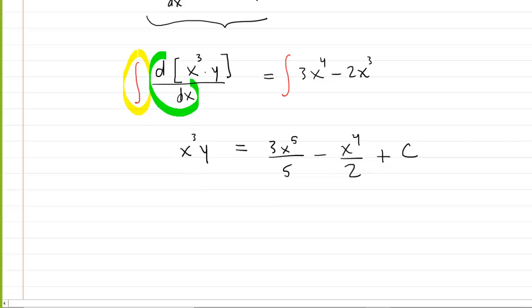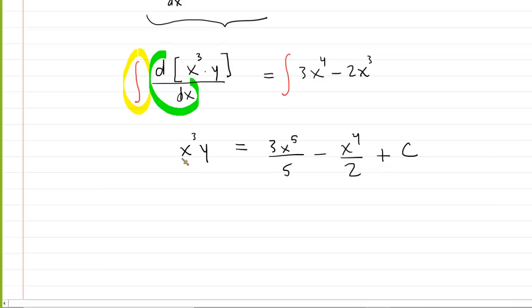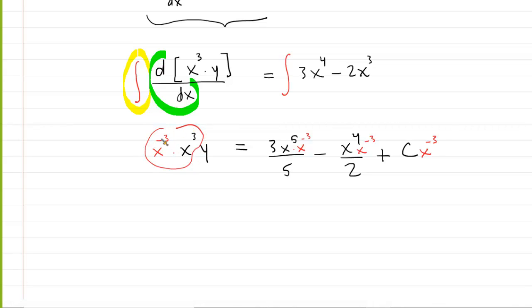Now, we still need to solve for y. And the best way, perhaps, to do that is to multiply each term by x to the negative 3. We will see why this is a nice little maneuver in just a moment. Every term, including the constant of integration. Now, x to the negative 3 multiplied by x to the positive 3. Remember that you would have to add these exponents. So, if you do that, you would have x to the 0, which is just 1. Anything to the 0 is 1. So, you'd have 1 times y, which is just y.